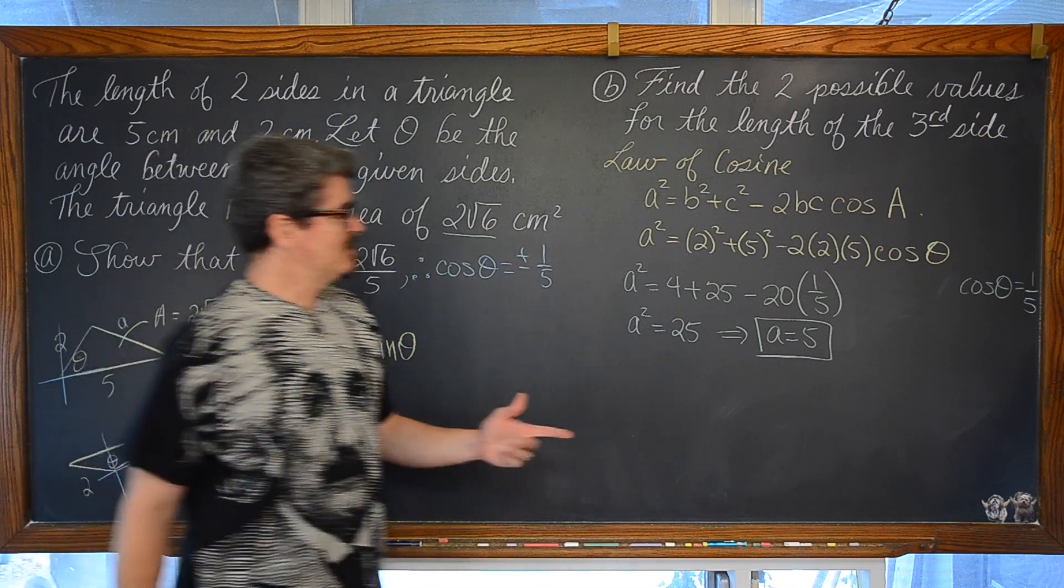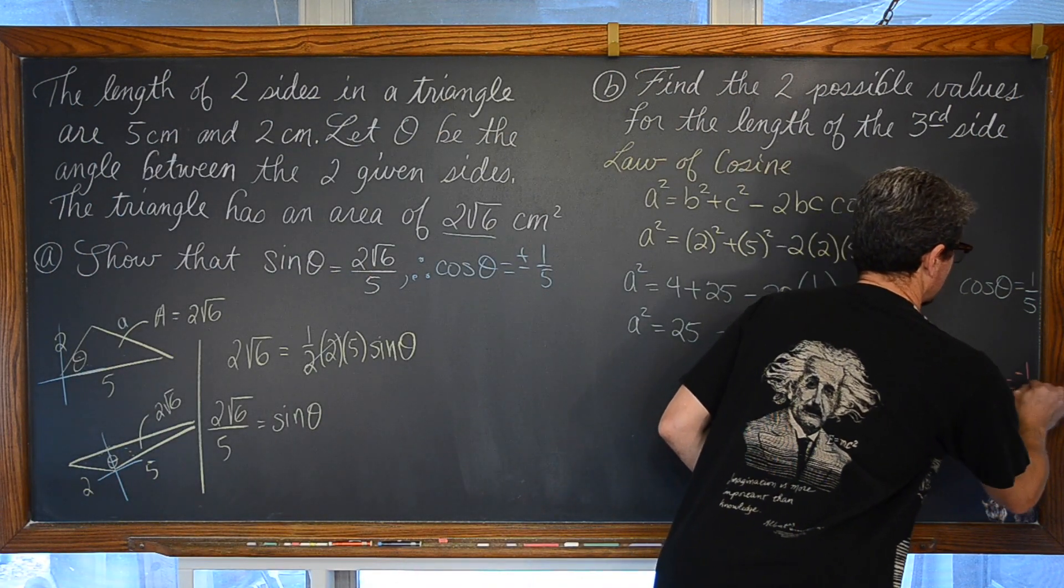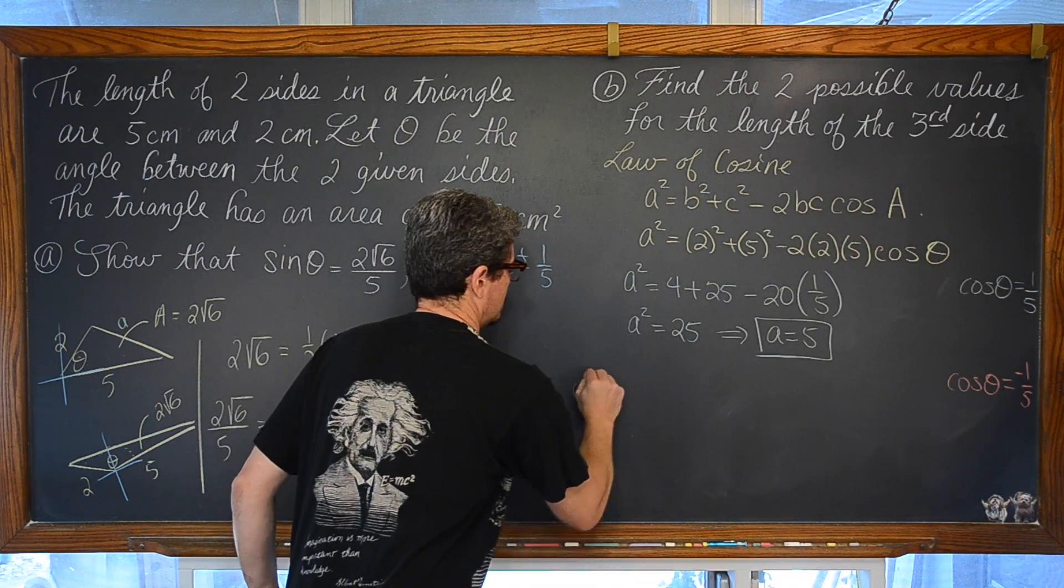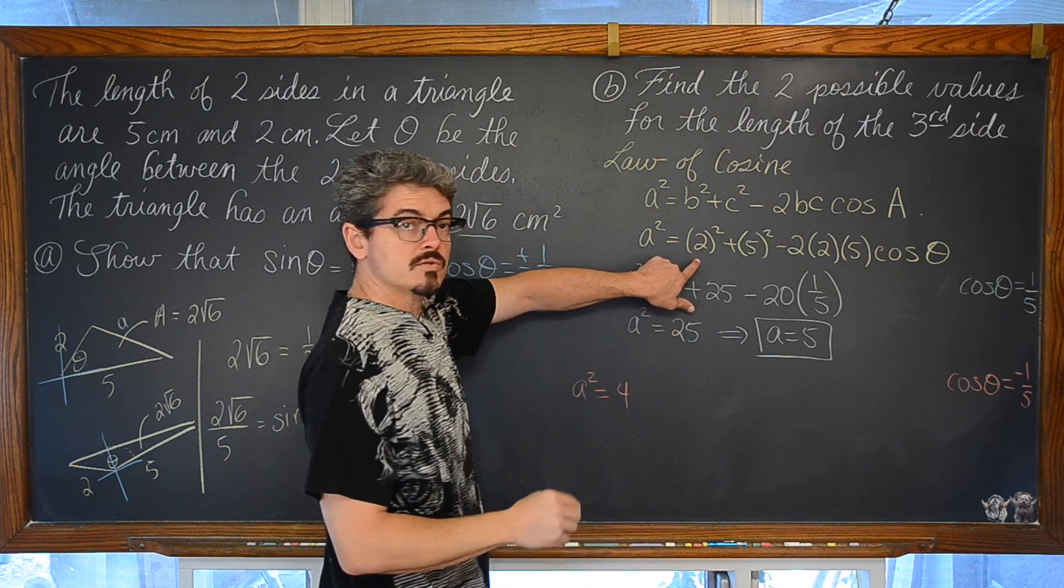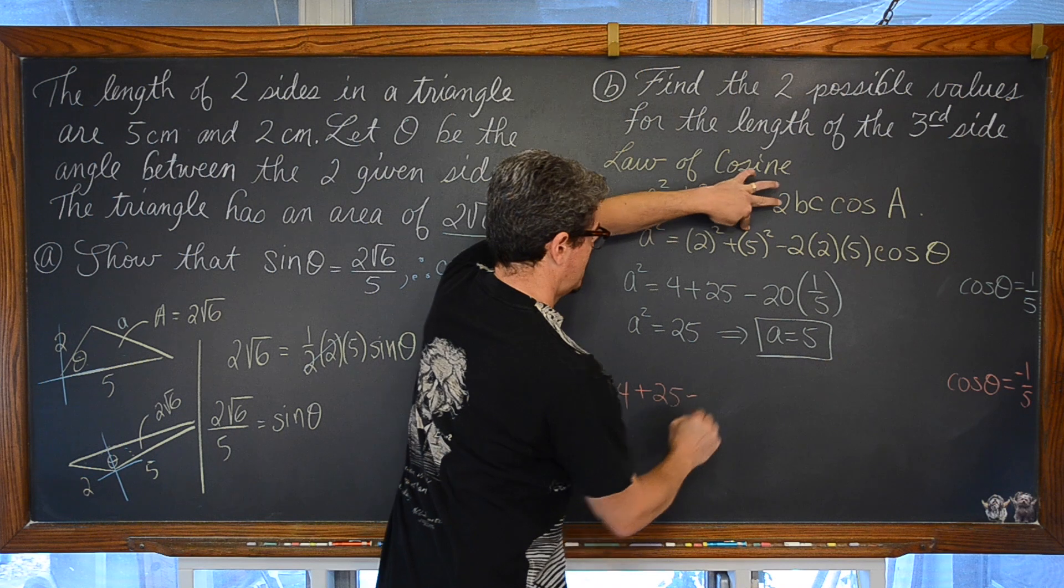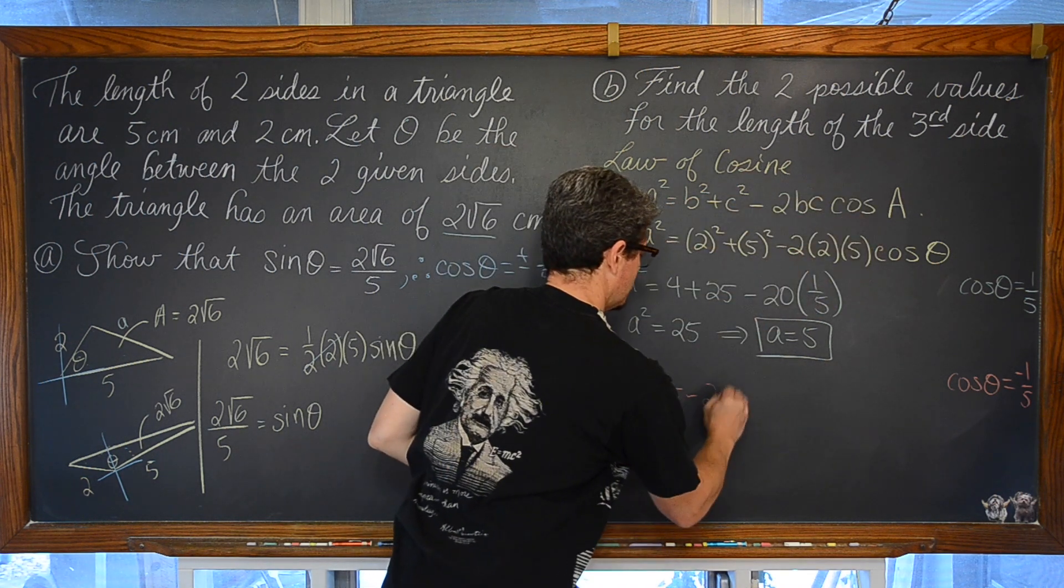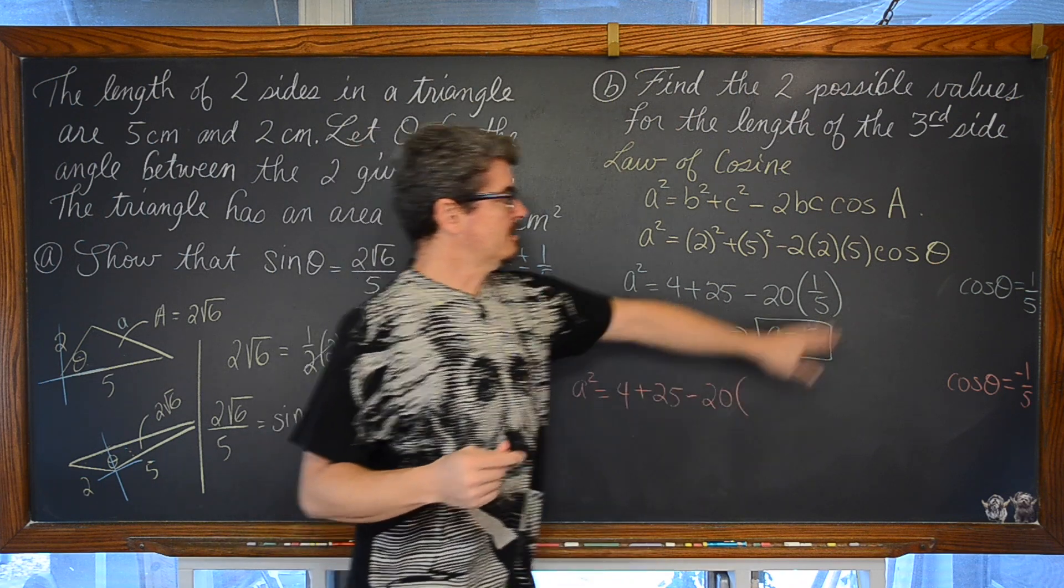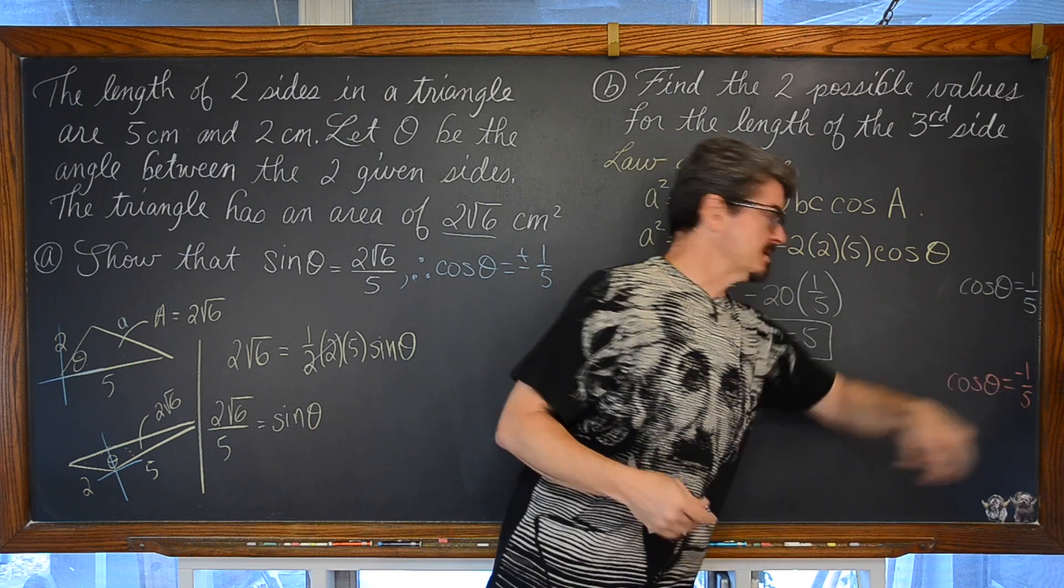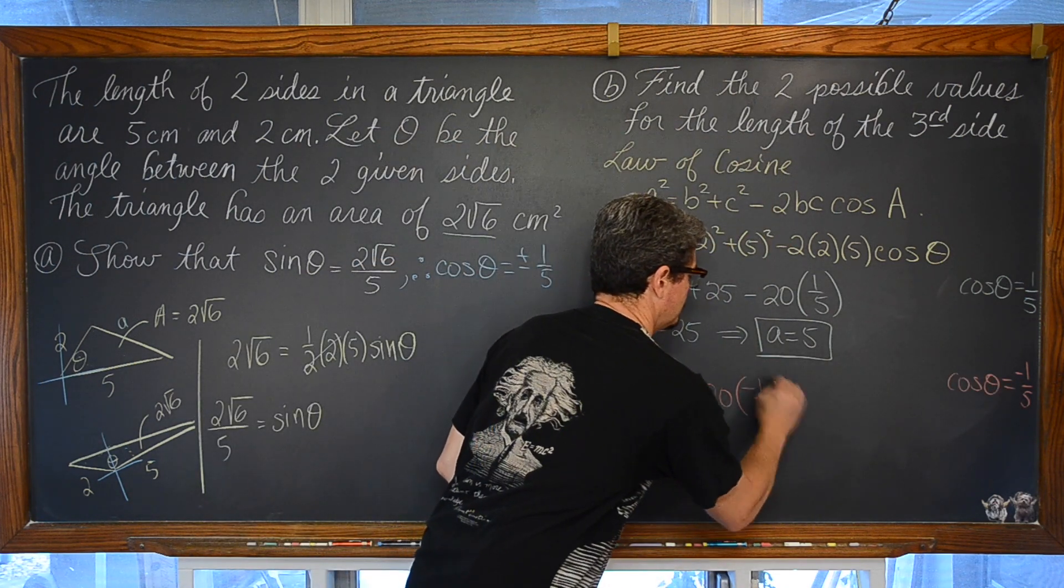So, now we're going to take into account that the cosine of theta can be negative 1 fifth. Again, 2 squared is 4, 5 squared is 25. 2 times 2 is 4, times 5 is 20, so minus 20. But, we're taking out the variable of cosine of theta, and plugging in what it potentially can be equal to, which is negative 1 fifth.